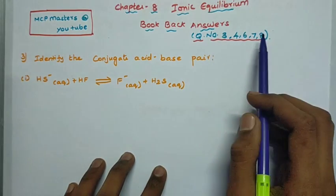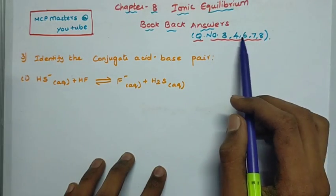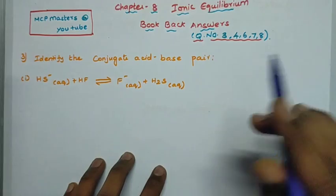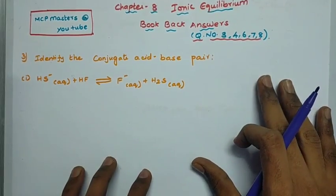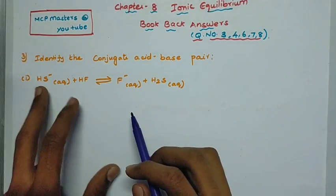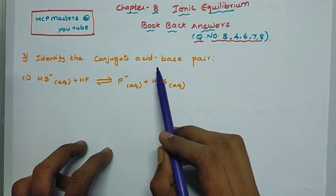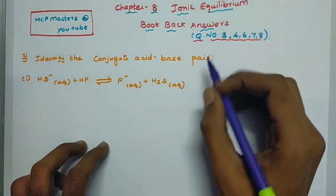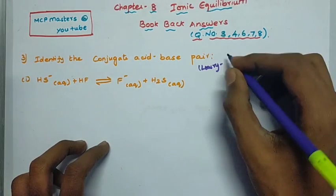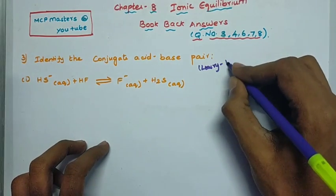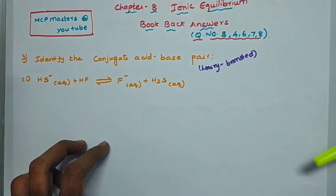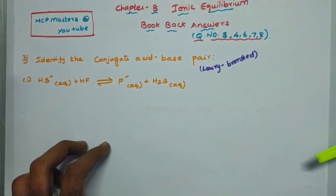So in this video, questions 3 to 8. For the third question: identify the conjugate acid-base pair. This is a Lowry-Bronsted theory concept. Let's discuss the Lowry-Bronsted theory.